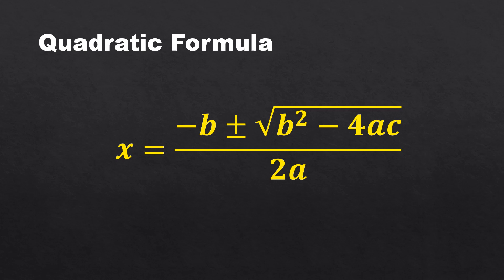Here is the quadratic formula: X is equal to negative B, positive and negative square root of B squared minus 4 multiplied by A multiplied by C, over 2 multiplied by A. Keep this quadratic formula in mind as we continue our discussion.